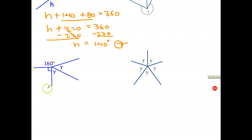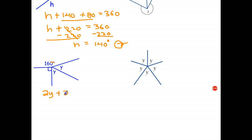So I can say Y plus Y is 2Y, plus 160 plus 90 — doing that in my head — is 250. And that must add to 360 degrees.